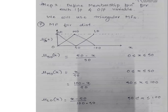Step 2 is to find out the membership function for all input and output variables. Here we are going to use triangular membership functions, though other types can be used as well. For dirt, we have 3 descriptors, and these descriptors indicate values in ranges: 0 to 50 for small dirt, 0 to 100 for medium dirt, and 50 to 100 for large dirt.